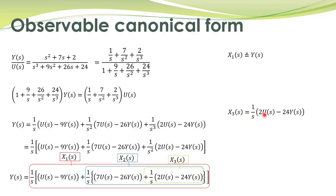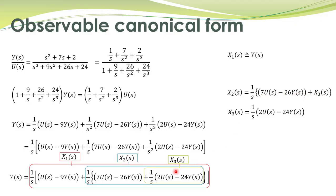So X3(s) equals 1/s multiplied by (2u minus 24y). And X2(s) is this term plus the one we named X3, so X2(s) equals X3 plus that expression. Then X1 will be equal to X2 plus this expression — that is, 1/s multiplied by this term plus X2.